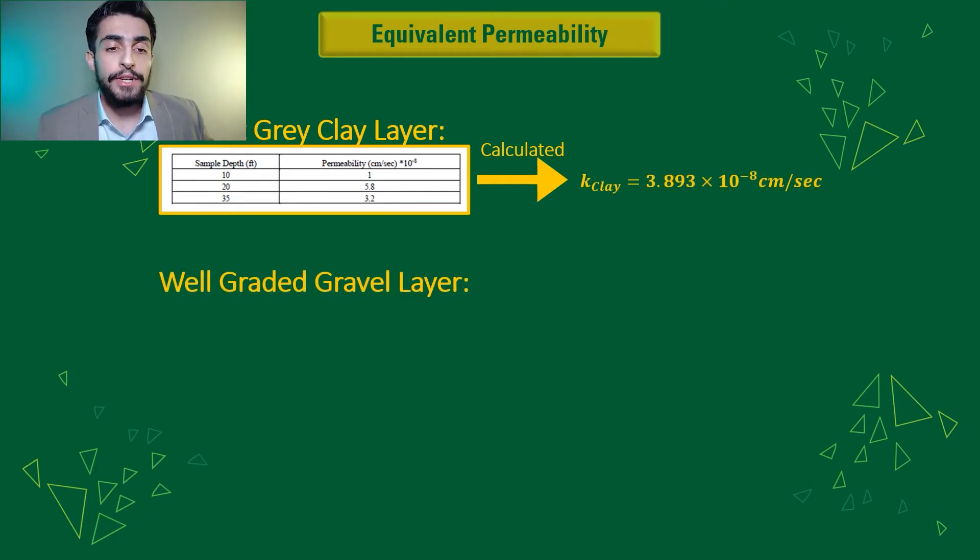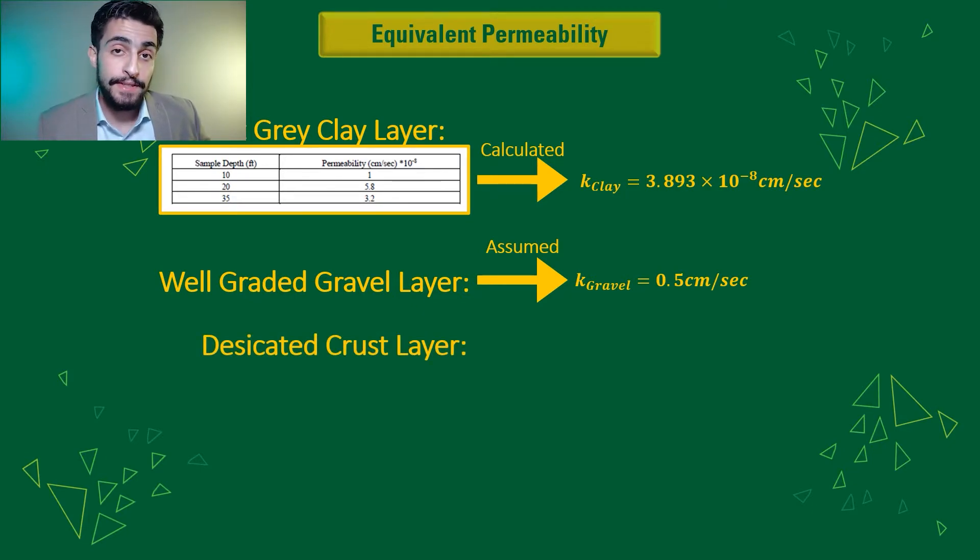And then for well-graded gravel, it was just assumed that it had a permeability of 0.5 centimeters per second, as it is a common value to use for well-graded gravel. And then desiccated crust layer is considered impermeable, so it won't impact the equivalent permeability.